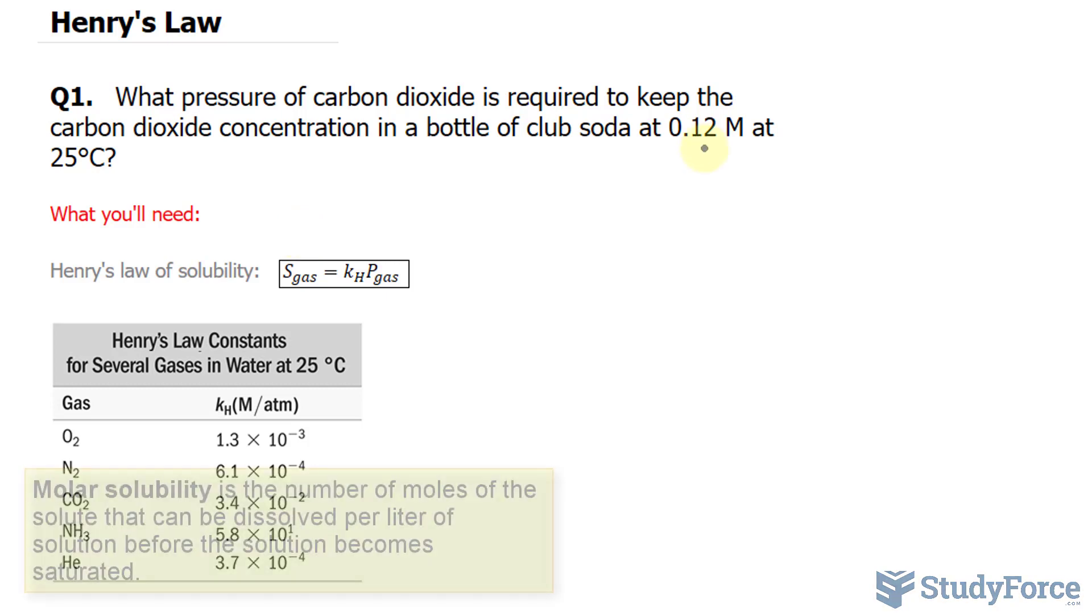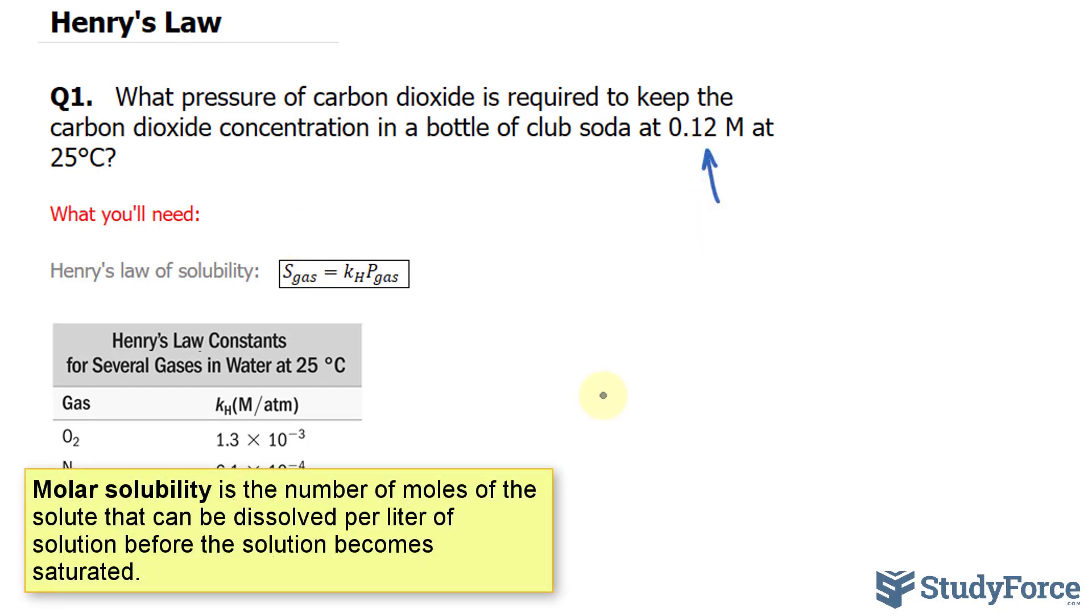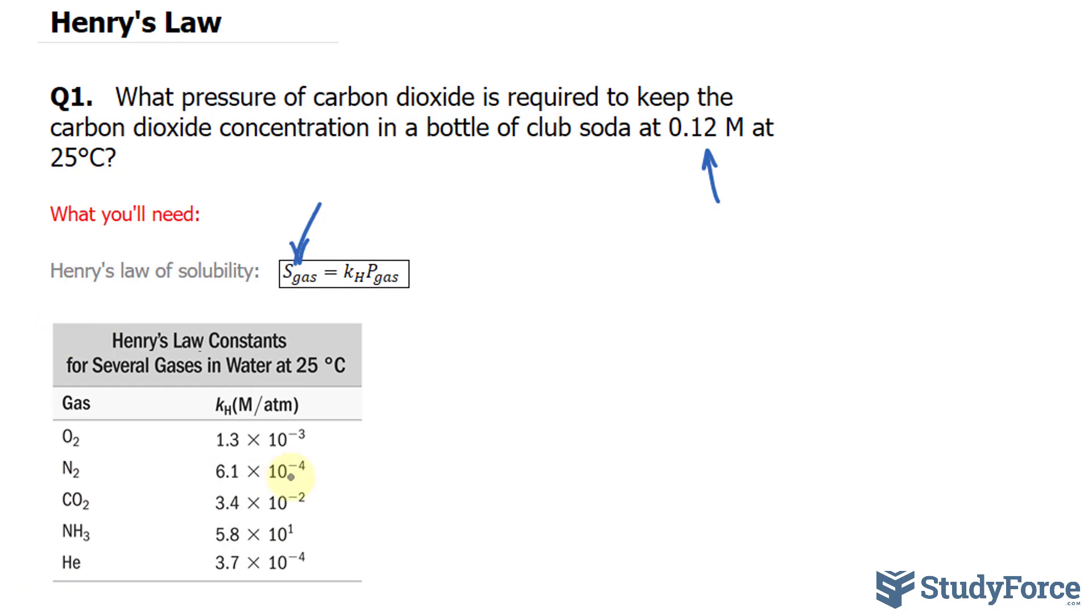That being said, we are told the solubility of carbon dioxide, which we can place right into there. We're looking for the pressure, and we can use the constant found in this table for carbon dioxide to be placed into here. So all this is, really, is rearranging of a formula.